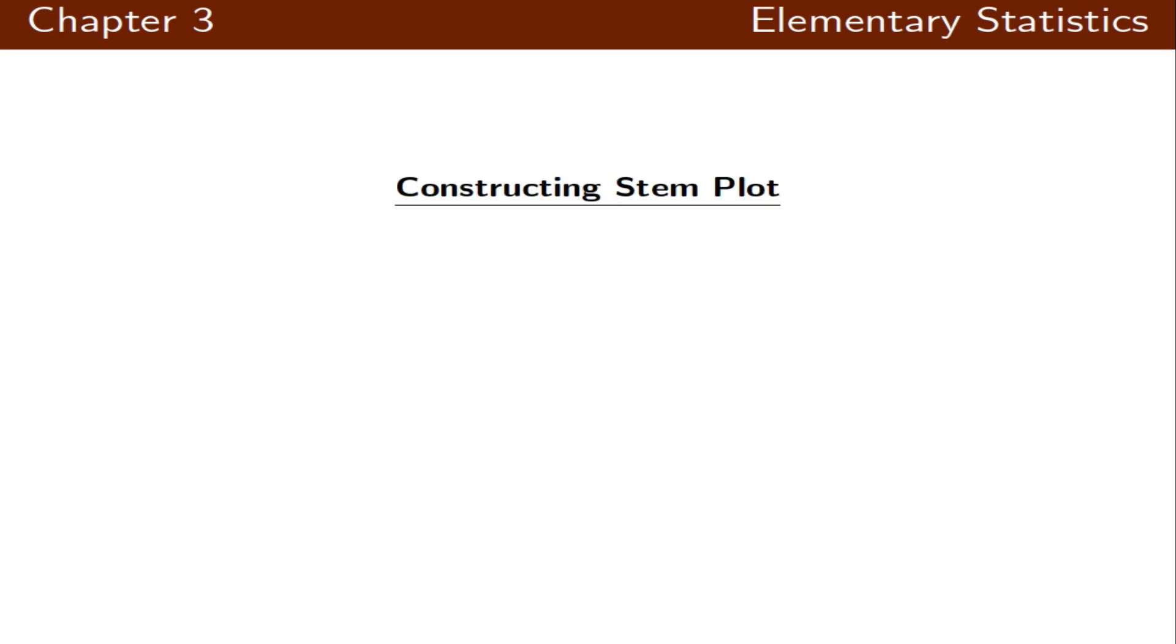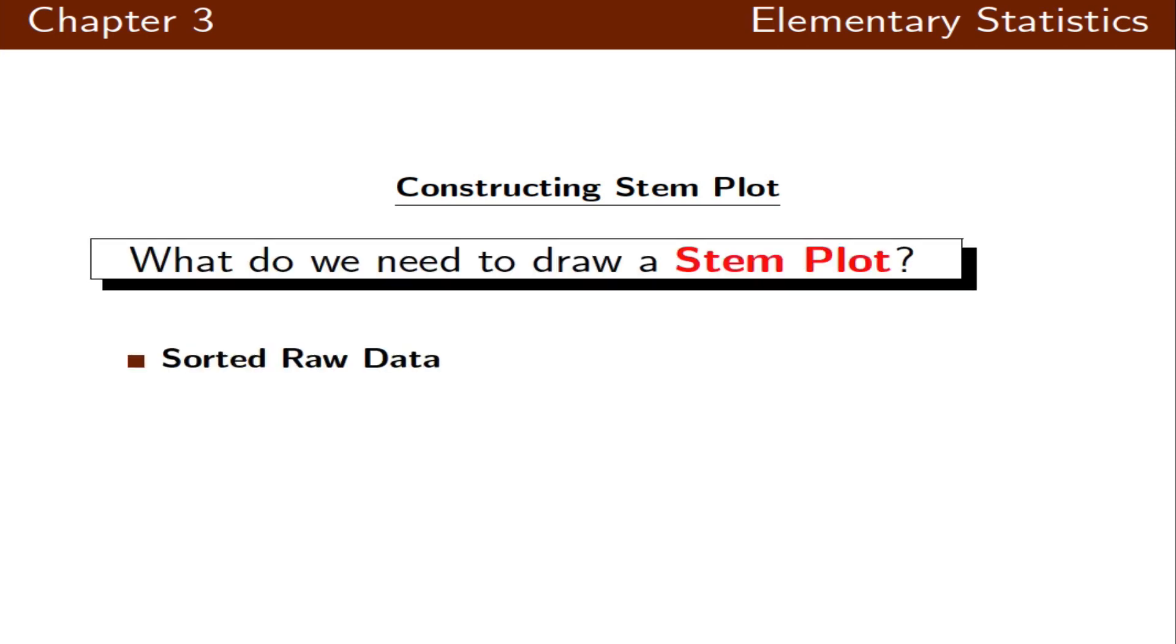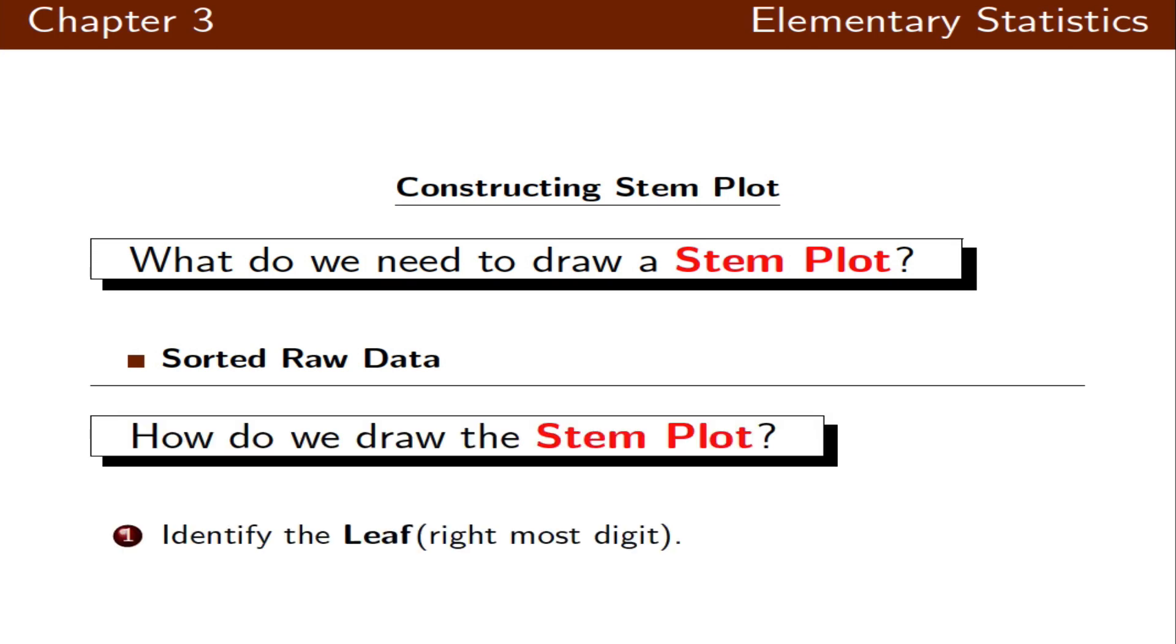Our last graph is making a stem plot. When you do a stem plot you need to make sure that we have sorted raw data. Then we identify the leaf, which is the rightmost digit, and the rest of them would be the stem.